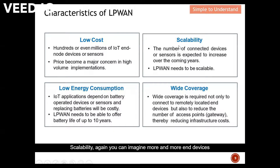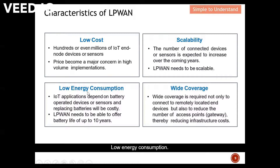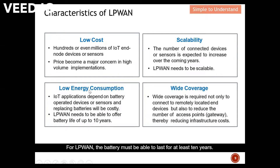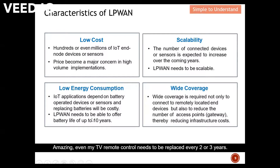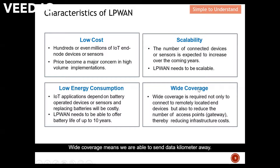Scalability: more and more end devices are required to connect to the gateway, and the gateway must be able to sustain this kind of connectivity. Low energy consumption — as we discussed, low power also means low energy consumption. For LPWAN, the battery must be able to last for at least 10 years. Even a TV remote control needs to be replaced every two or three years, but for LPWAN the battery lifetime is 10 years.